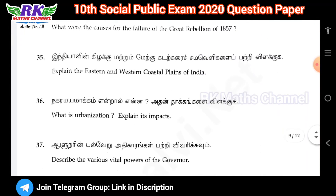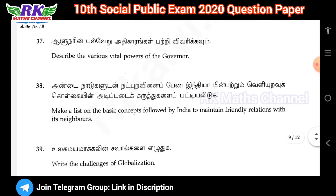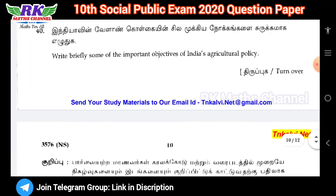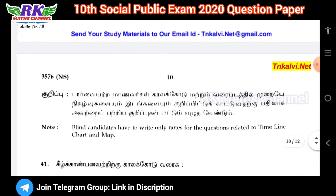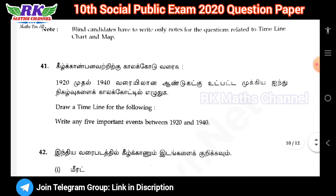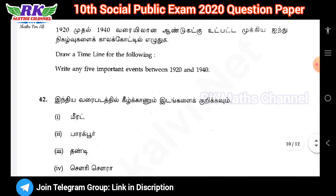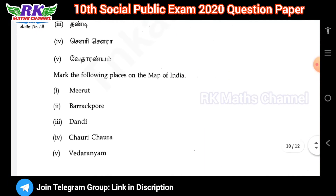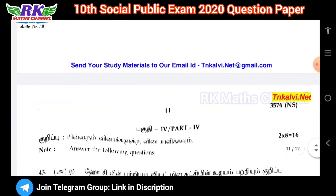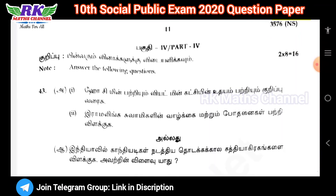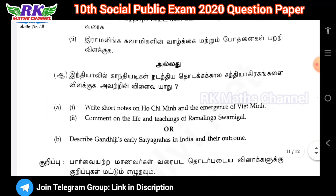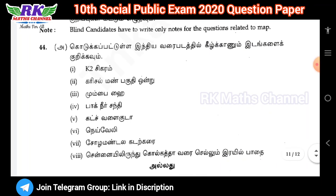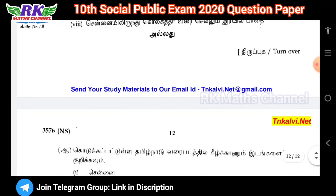Five more questions — compulsory question number 40. Question number 40 is the map point question, question number 41 is the timeline question, and question number 42 is the India map question — that is the compulsory one. Part 4 is the 8-mark question with 2 questions.